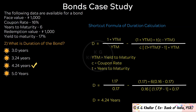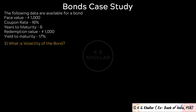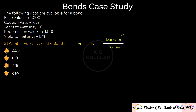Personally I find the tabular form much better, and with practice you don't even need to make any table. The next question is: what is the volatility of the bond? Volatility of the bond is simply duration divided by (1 + yield to maturity). Duration is 4.24 and YTM is 17%, so volatility equals 4.24 divided by 1.17 equals 3.62. Thus the correct option is option D.